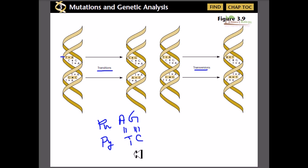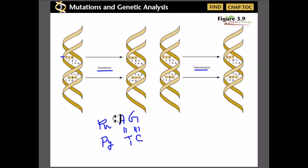Here is an example. We have T paired with A — that is a pyrimidine-purine pair. For a transition, a pyrimidine is replaced by a pyrimidine. So T is replaced with C, and A is replaced with G, which is another purine. We can see that a pyrimidine is replaced by another pyrimidine and a purine is replaced by another purine.